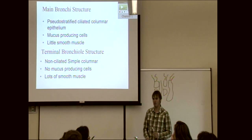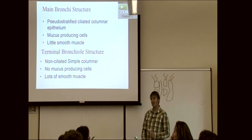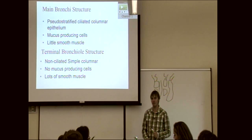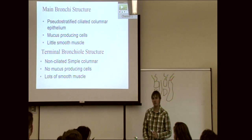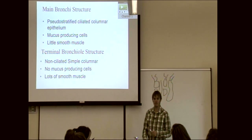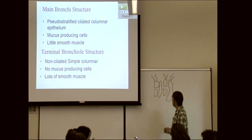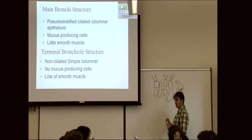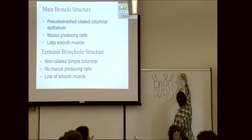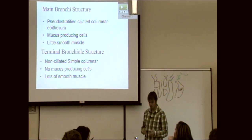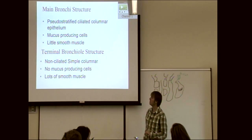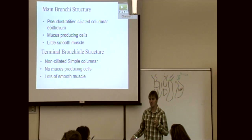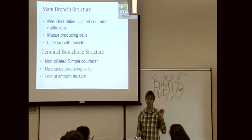The mucus-producing cells are called goblet cells — you'll see them in the respiratory, digestive, and immune systems. The bronchi don't have much smooth muscle because they don't change size in response to anything; they just stay open, sort of like the trachea.